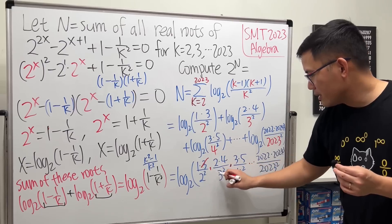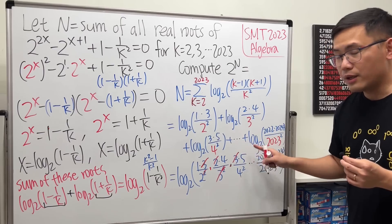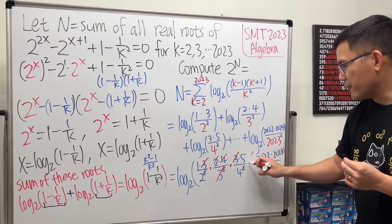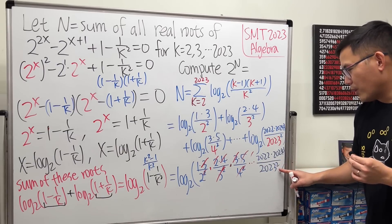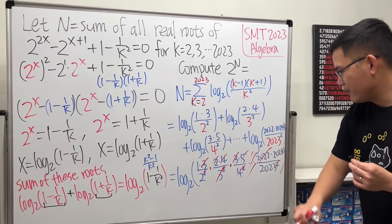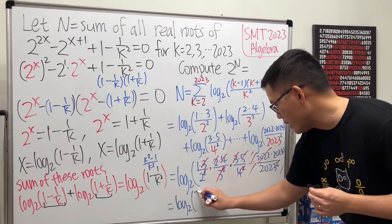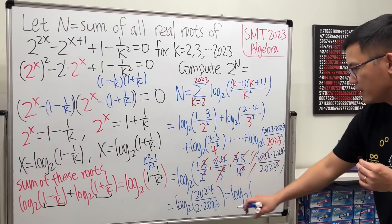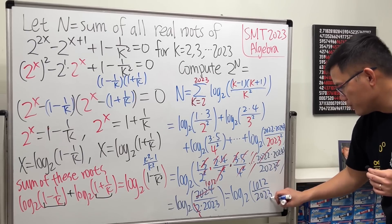Now for the cancellation: the 3 in the numerator cancels with a 3 in a denominator completely; the 4 cancels; the 5 cancels; and so on through 2023. What remains on top is just 2024 times 1, giving 2024. On the bottom, the surviving factors are 2 and 2023, giving 2 times 2023. So N equals log₂(2024 over (2 times 2023)) equals log₂(1012 over 2023).